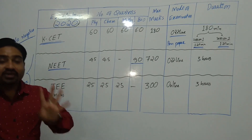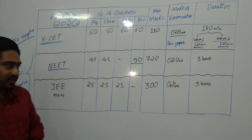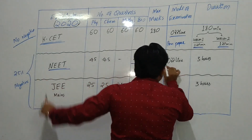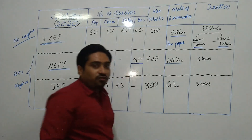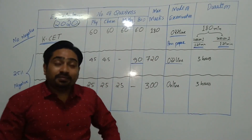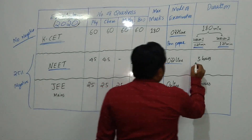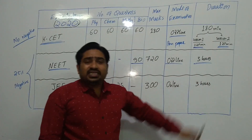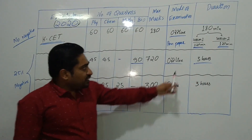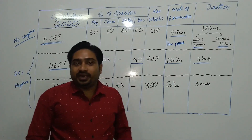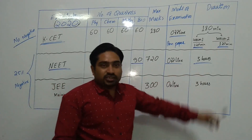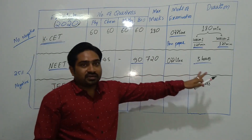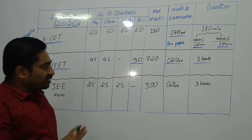The maximum marks for NEET will be 720. This is a completely offline, pen-and-paper based examination. The duration of the exam is 3 hours for normal students. For students with benchmark disabilities, the duration is 4 hours.